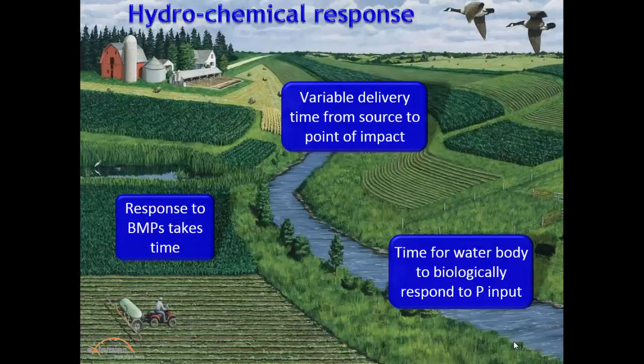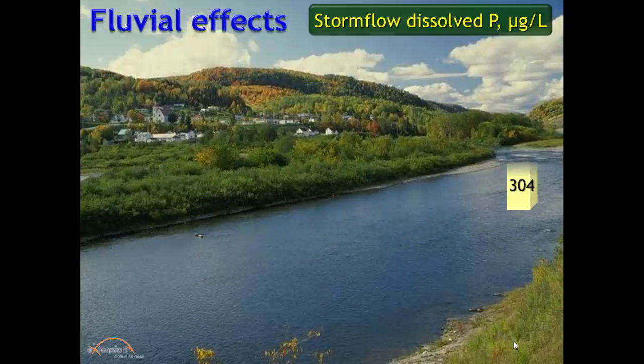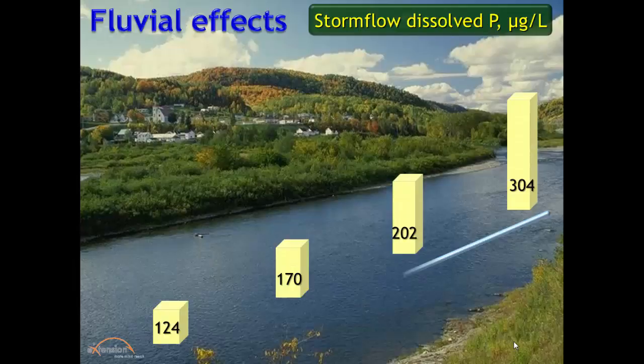Moving to hydrochemical response: BMPs take time to become effective, and phosphorus already in the system will be released slowly. Work in a Pennsylvania watershed showed that sampling water downstream during storm flow revealed decreasing phosphorus concentrations, because suspended bank and bottom sediments were taking up dissolved phosphorus. So during storm flow, a slight decrease was observed moving downstream.